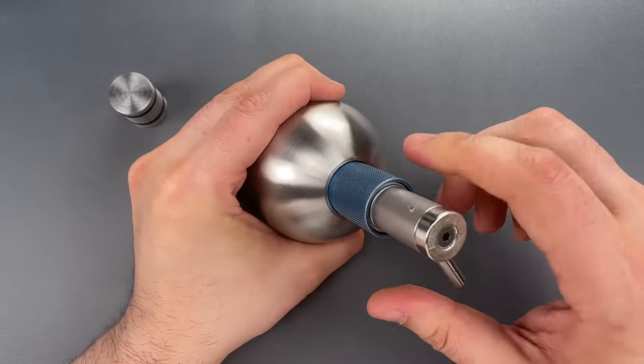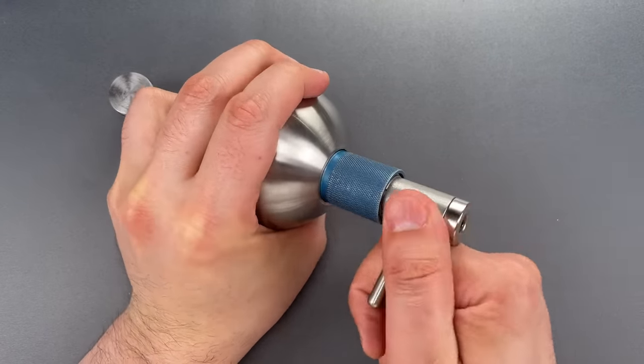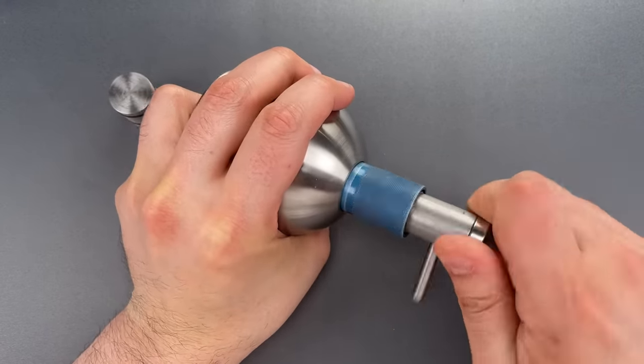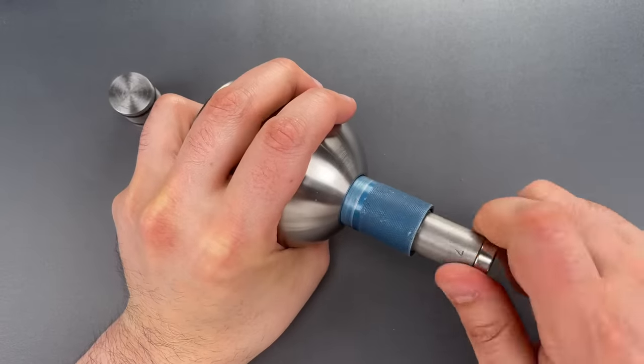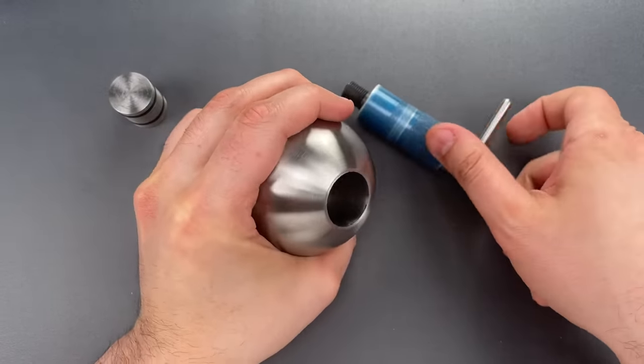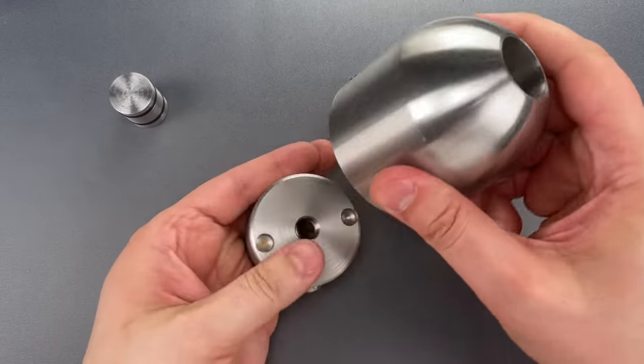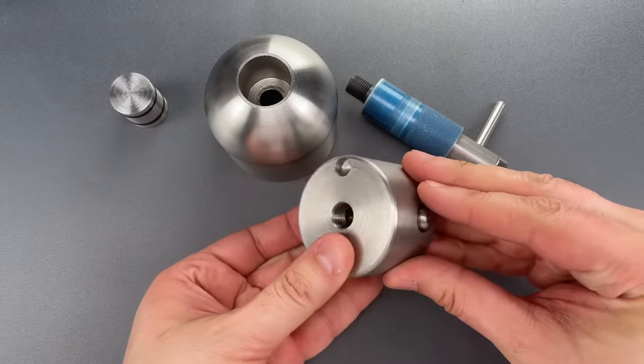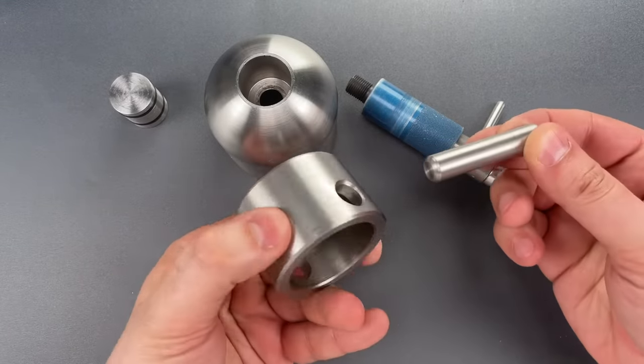and what we do is we turn it clockwise to open. That's the opposite of the direction you would normally turn a bolt. Once we do that, the shroud will come off. That reveals the shackle carrier, and we can just pull the shackle out.